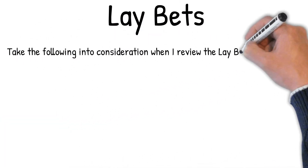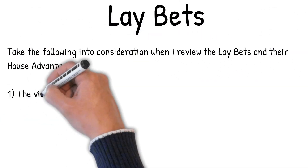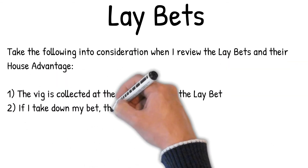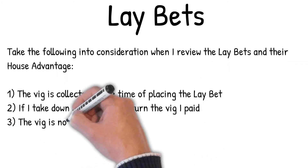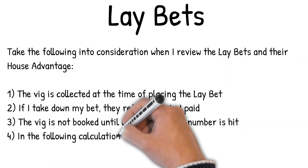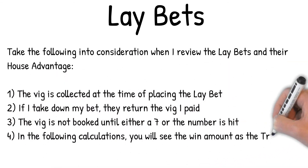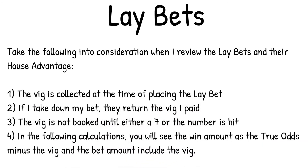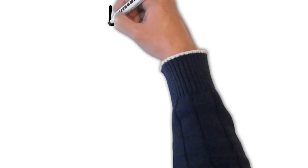Lay bets — take the following into consideration when reviewing lay bets and their house advantage. One: the vig is collected at the time of placing the lay bet. Two: if you take down your bet, they return the vig you paid. Three: the vig is not booked until either a seven or the number is hit. Four: in the following calculations, the win amount is the true odds minus the vig, and the bet amount includes the vig.